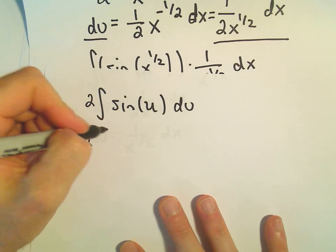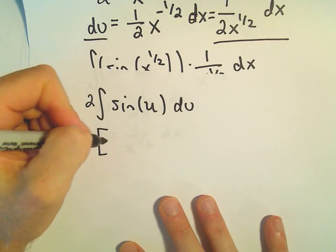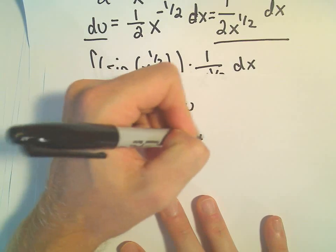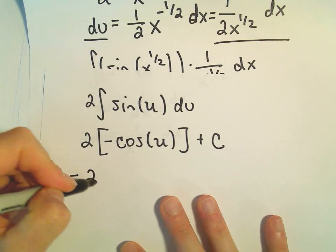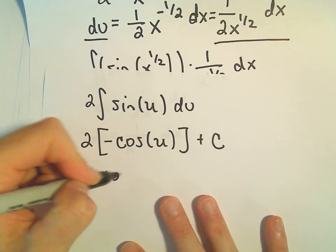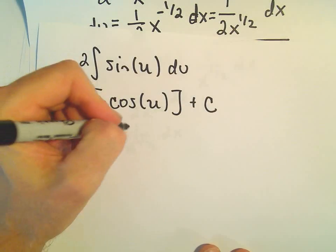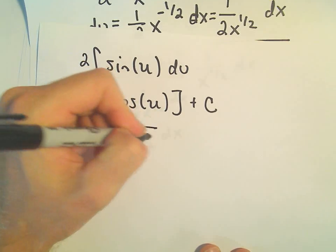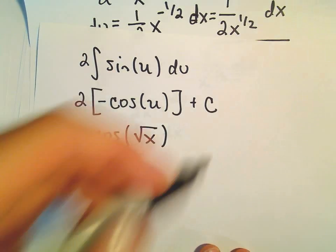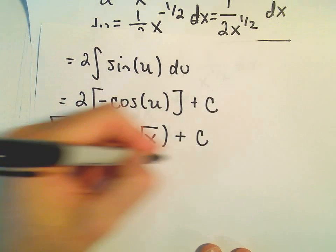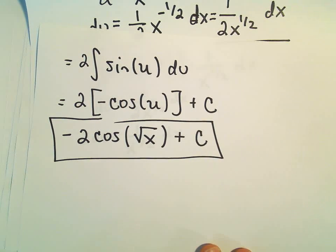And we just saw the antiderivative of cosine, or excuse me, of sine as negative cosine plus c. And I'm going to write that as negative 2 cosine of u, which was, where'd it go? Just x to the 1 half. And I'm going to rewrite that as square root of x, since that's how we started, plus c. And that would be our antiderivative for the second one.